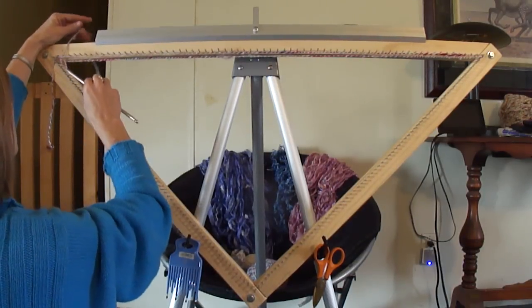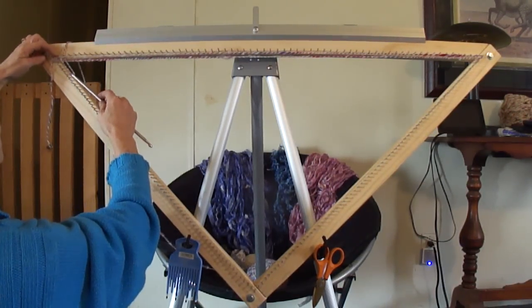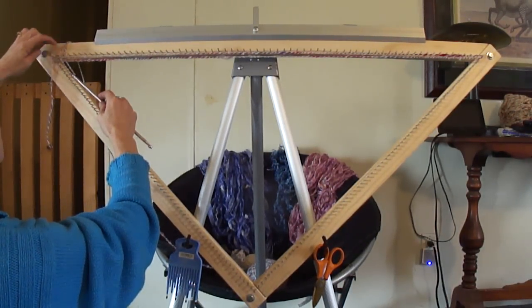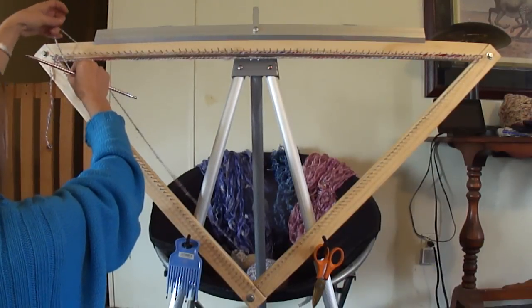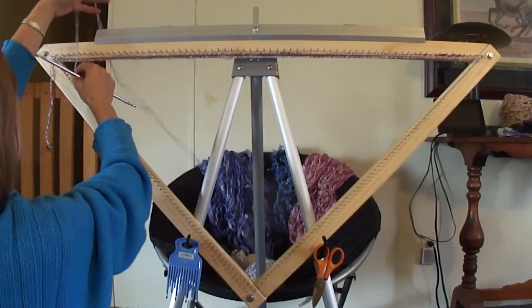And the reason I did that is because, as you can see, we went over on this yarn going up. When I do that, that little loop comes down, and we put it on the third peg down, and run it across.